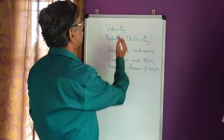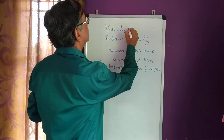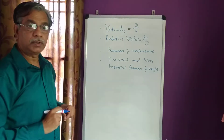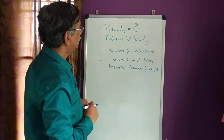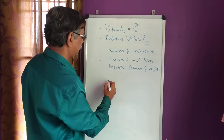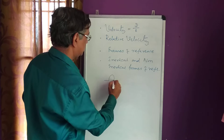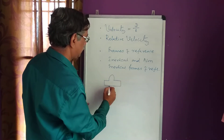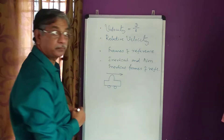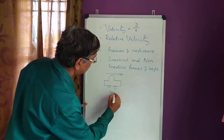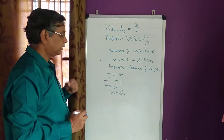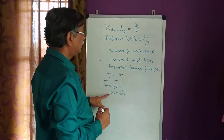Velocity, as you know, is defined as distance by time. Now, for example, there is one vehicle moving in this direction with 100 kilometers per hour. This is the velocity.